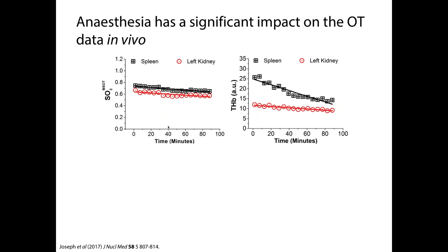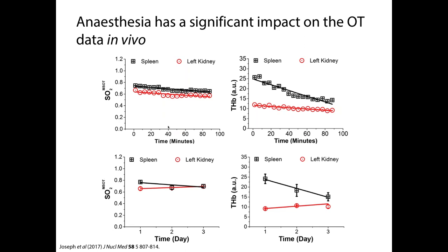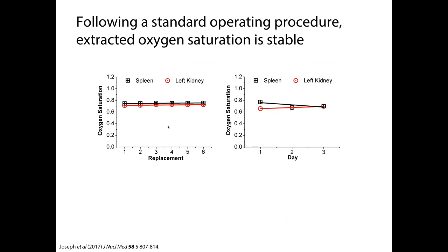The first thing we did was take healthy mice and perform imaging of their blood-rich organs, such as the spleen and the kidney, and look at how these changes track over minutes, then over several hours and over several days of different repeated measurements. The oxygen saturation trace was very stable. However, we see quite a fluctuation in total hemoglobin, which is an effect known to be a result of isoflurane anaesthesia. Over several days, again, the oxygen saturation metric was very stable, but there were changes in total hemoglobin, consistent with previous reports of the influence of isoflurane anaesthesia on the mice.